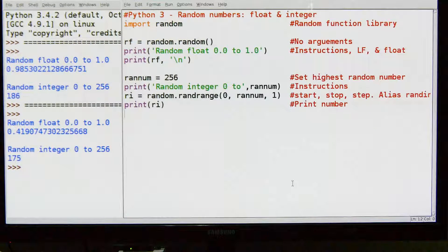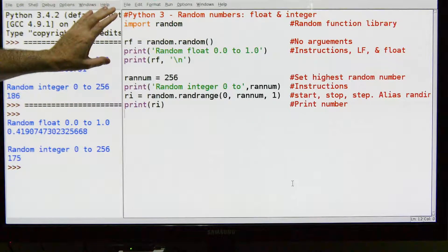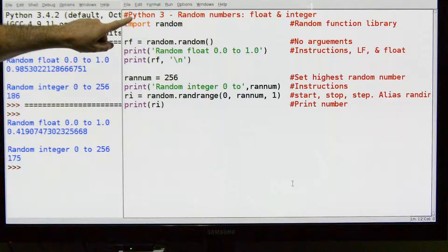This is my library file for random numbers. Typically when you're doing random numbers, you want to do either floats or integers, and I've got an example of both in here. So let's just get started.